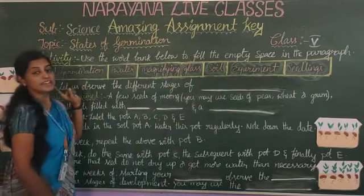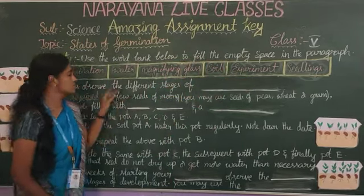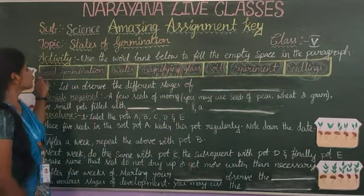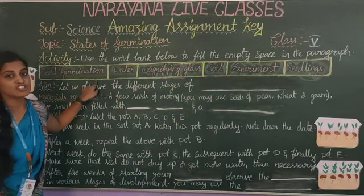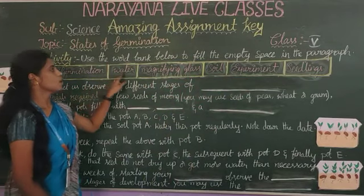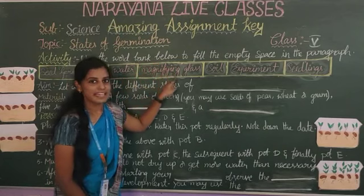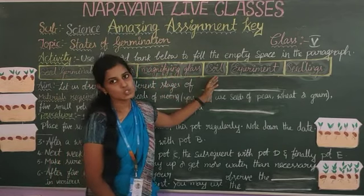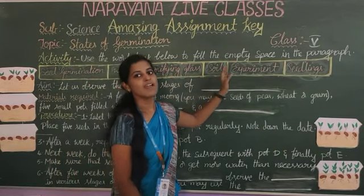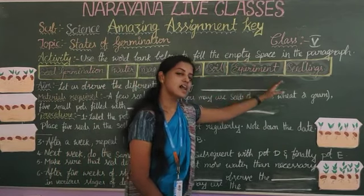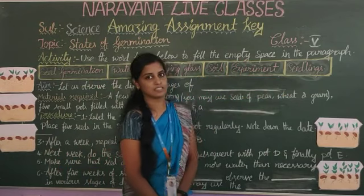The help box contains the following words: seed germination, water, magnifying glass, soil, experiment, and seedling.